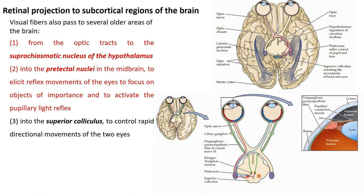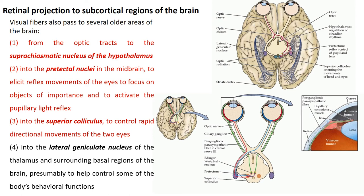The visual pathway starts from the retina to the optic nerve, optic chiasm, and optic tract, mainly terminating in the lateral geniculate nucleus of the thalamus. Some optic tract fibers pass to the suprachiasmatic nucleus of the hypothalamus to control circadian rhythm. Others go to the pretectal nucleus to initiate the pupillary light reflex by stimulating the Edinger-Westphal nucleus bilaterally. Others project to the superior colliculus, which controls rapid directional eye and head movements in response to visual stimuli.